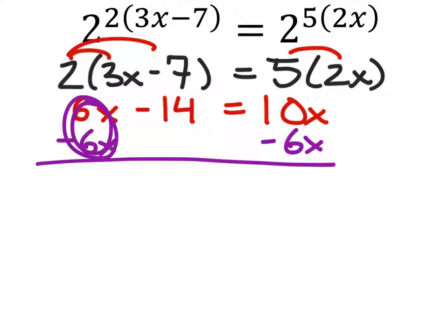This zeroes out, and that becomes a zero pair. We still have that negative 14, and this now equals 10x minus 6x, which is 4x.